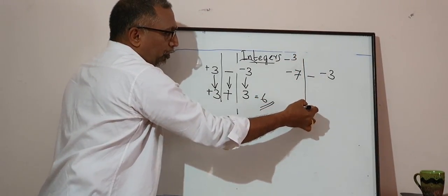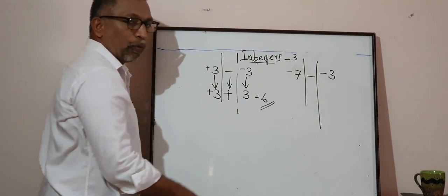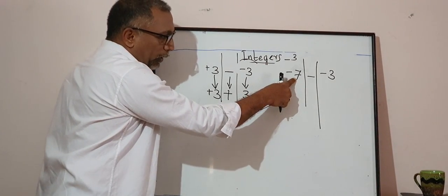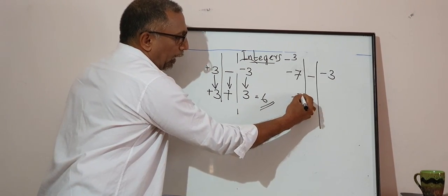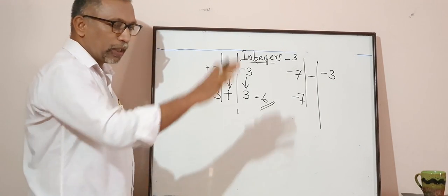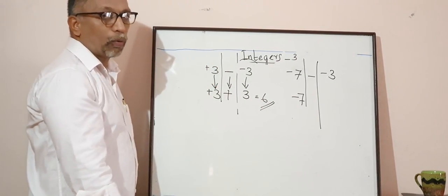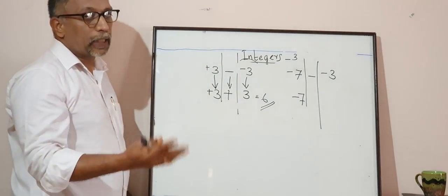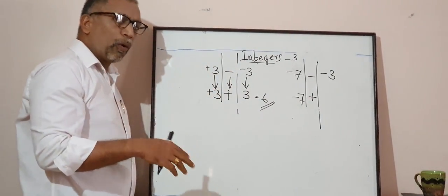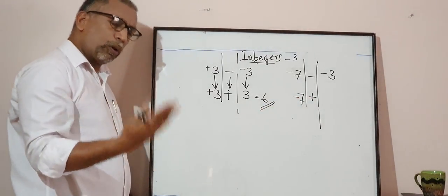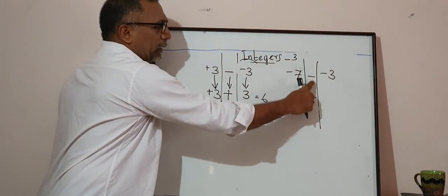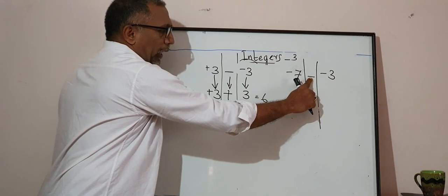The first number, the operation sign, then the second number. What does the three-step formula say? First: write the first number as itself — negative 7, no change. Second: this minus sign becomes plus. These two steps are the same in all questions — copy the first number and always change the minus sign to a plus sign.